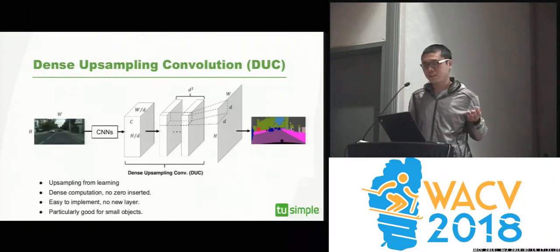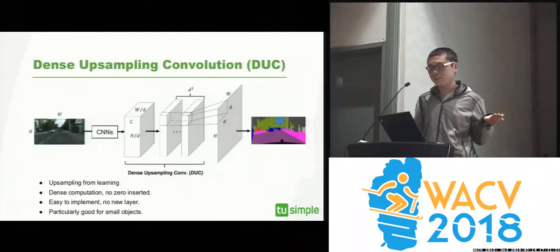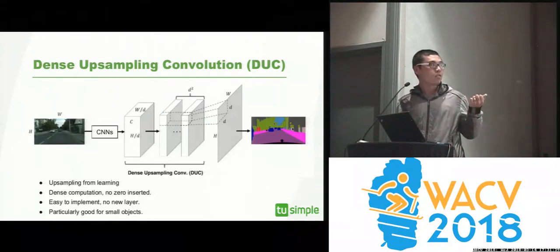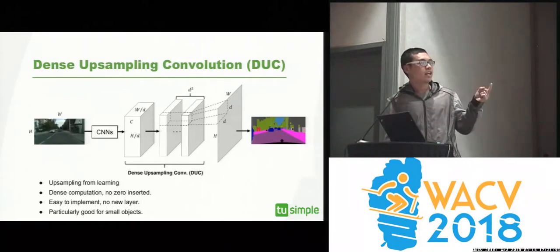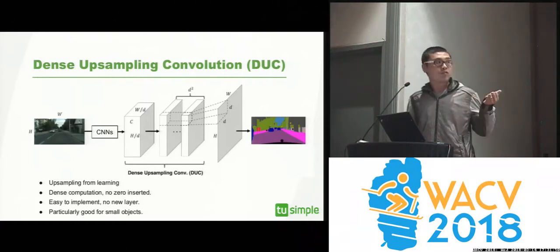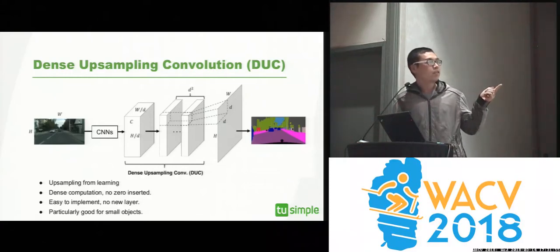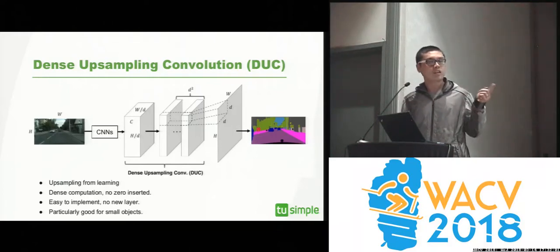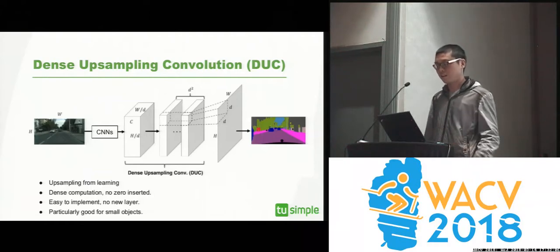DUC is just a normal convolution — there are no new layers. Given an image of W times H, we go through CNNs and obtain a feature map with a downsample factor of D. We then go through a normal convolutional layer with D-squared channels. After that, we collapse the D-squared channels to a D times D patch in the output label map, doing the same for all spatial locations. This lets us recover the full resolution image of W times H, and we apply softmax to get the final classification result.